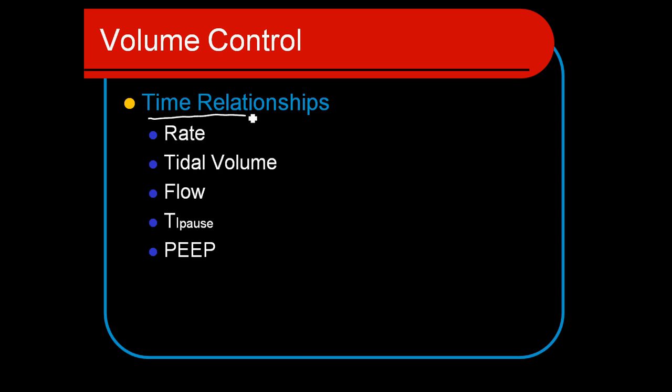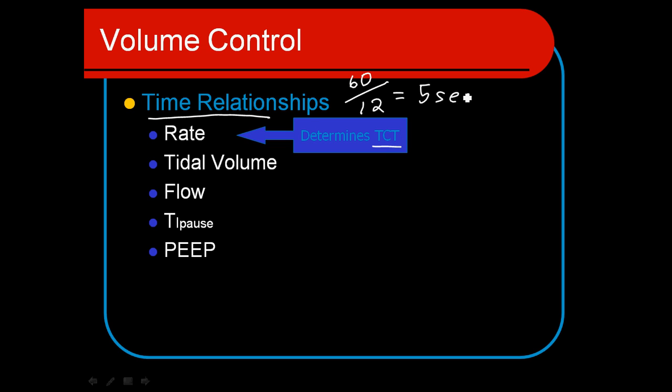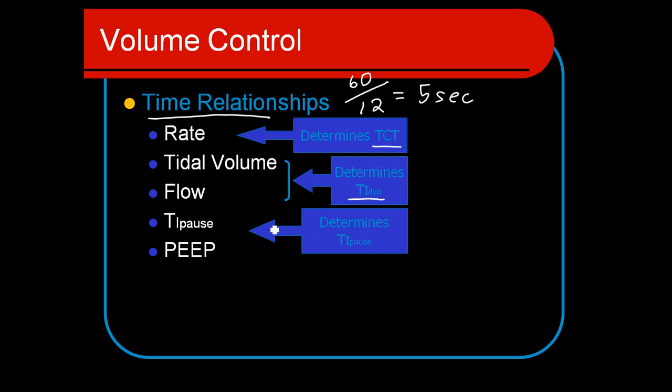These time relationships - how do we control things like the IE ratio? The first key component is the rate, which will set the total cycle time. In Module 5 we'll look at these in detail, but just to give you a quick review: we have 60 seconds in a minute, and if we had a rate of 12 established on our ventilator, that would give us five seconds for our total cycle time. The relationship between tidal volume and flow determines our Ti dynamic - that's how long the breath takes to go in. Obviously, if we increase the flow, the Ti dynamic would decrease. If we decrease the flow, the Ti dynamic would go slower.